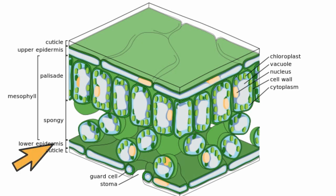Next you have the upper leaf cells, also called the palisade mesophyll. They contain chloroplasts and trap the energy in sunlight for the process of photosynthesis.